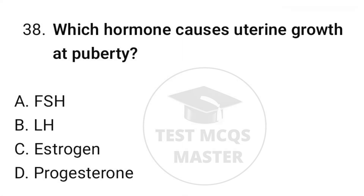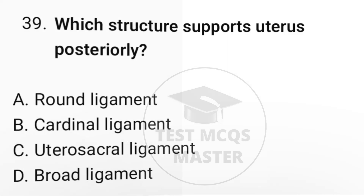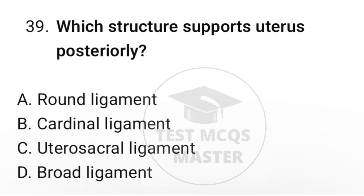Question number thirty-eight: which hormone causes uterine growth at puberty? The correct option is C, estrogen. Question number thirty-nine: which structure supports the uterus for stability? The correct option is C, uterosacral ligament.